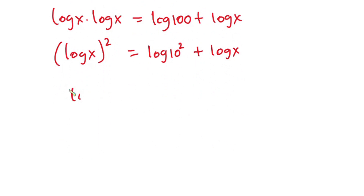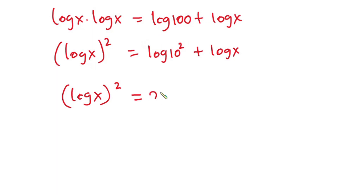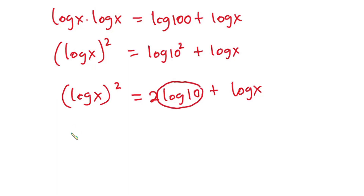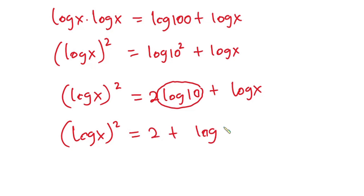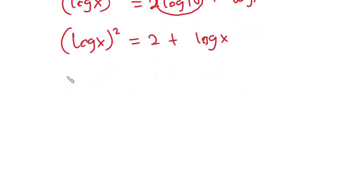Simplifying further, we have log x squared is equal to — I'm going to move the exponent to the front — two times log 10 plus log x. Now since the log is in base 10, log 10 is equal to one, so we have log x squared is equal to two plus log x.